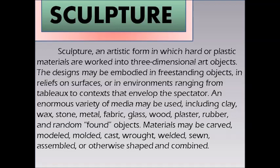Materials may be carved, modeled, molded, cast, welded, or assembled. Sculpture is the branch of visual art that operates in three dimensions. Durable sculptural processes originally used carving and modeling in stone, metal, ceramics, and wood. Since modernism, there has been almost complete freedom of materials and processes. The revival of classical models in the Renaissance produced famous sculptures such as Michelangelo's David.